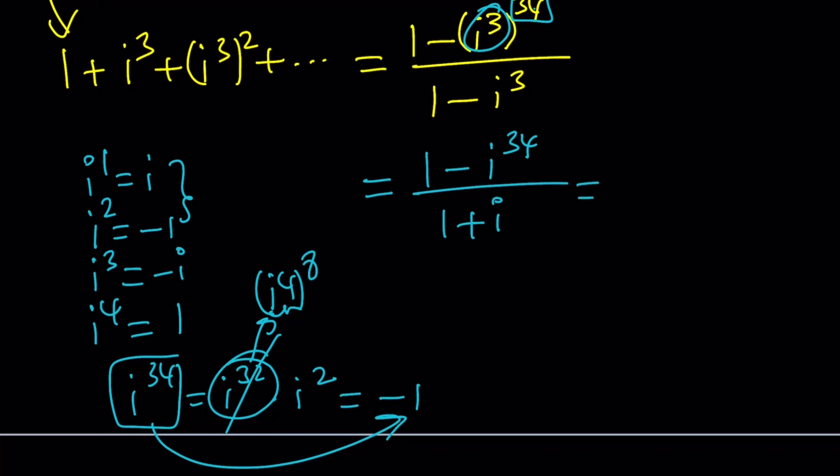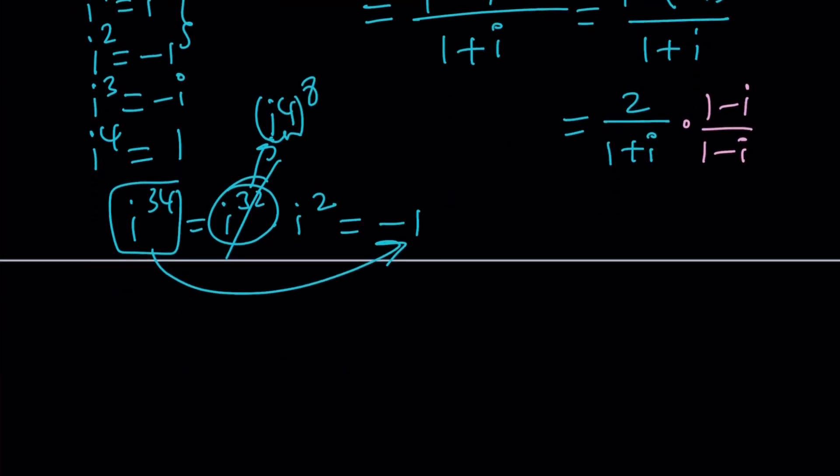i to the 34 is negative 1. So this is 1 minus negative 1, be careful with the minus sign here, divide by 1 plus i. That's 2 over 1 plus i. We're not done yet because we still have to get rid of the i at the bottom. Multiply by 1 minus i top and bottom. The top gives you 2 minus 2i, and at the bottom you get sum of two squares. The product of z and z bar is always a real number. If you're not familiar with these, check out the lecture videos. This becomes a 2, and the answer is 1 minus i. This is the end of the first method.